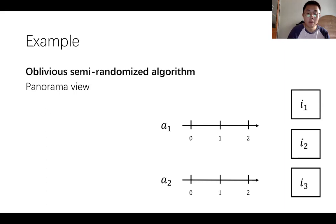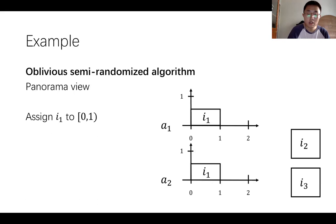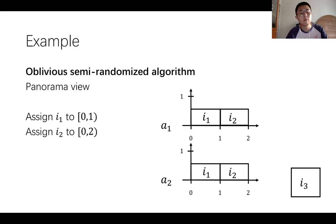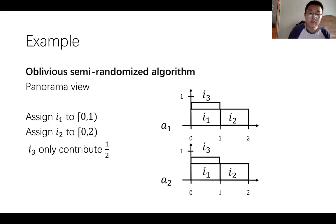However, in the panorama view, the algorithm must further assign each impression to a subset of 0 to 2 for both advertisers. It is without loss of generality to assign the first impression to 0 to 1, so the intervals 0 to 1 of both advertisers are assigned with probability 1 over 2, contributing 1 to the objective. It is reasonable to assign the second impression to 1 to 2 so that it is disjoint with the first one, contributing another 1. However, the third impression can only contribute 1 over 2 regardless of the choices of subsets, because the entire interval 0 to 2 has been semi-assigned once. So the expected objective is 5 over 2.